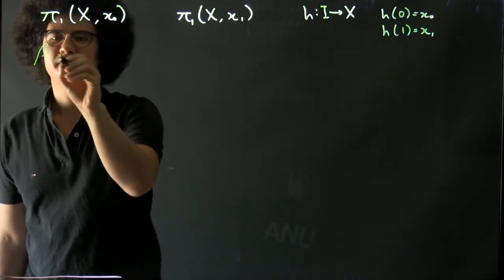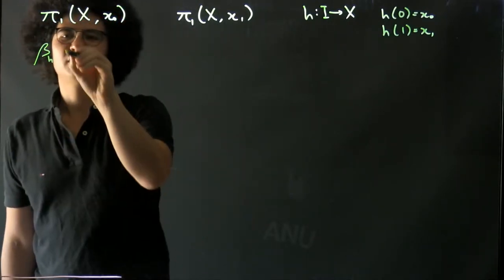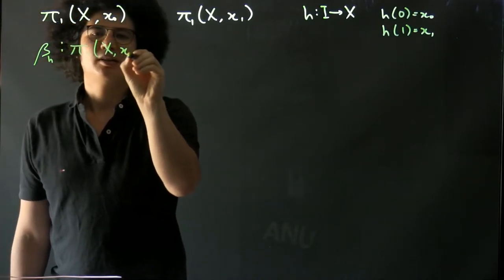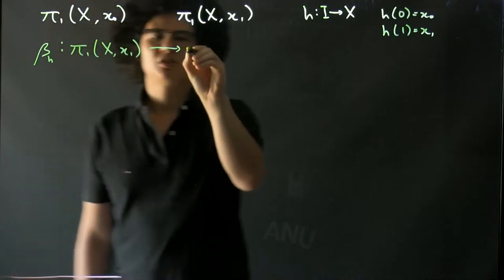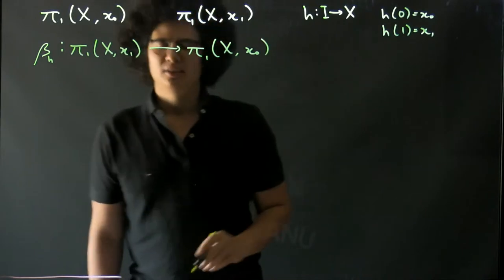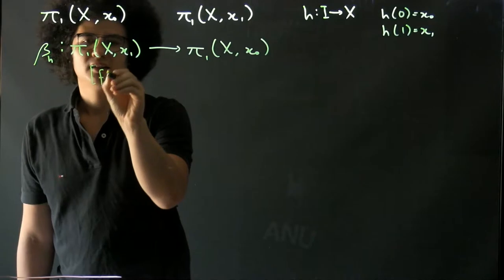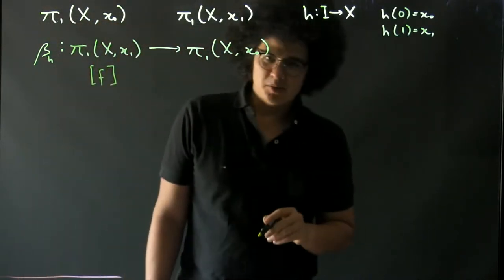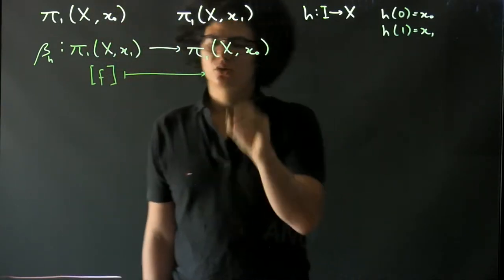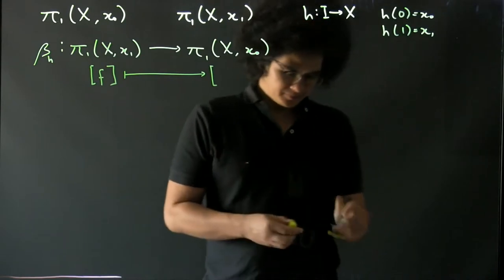We're going to define a homomorphism β_h which goes from the fundamental group at x₁ to the fundamental group at x₀. What does it do? Well, it takes a homotopy class of loops here and sends it to...